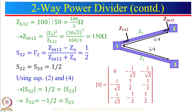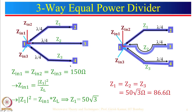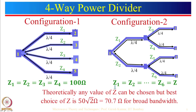The reflection coefficient is not good and there is coupling between the two ports, meaning isolation between these two ports is not very good. After the two-way divider, we looked at the three-way, where Z1 = Z2 = Z3 should be 86.6 ohm. We also looked at two configurations for a four-way power divider: one with a single lambda/4 section and one with two lambda/4 sections.